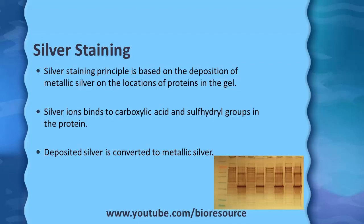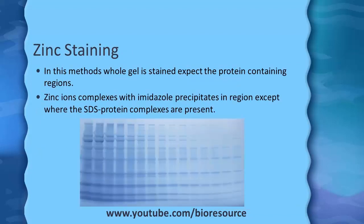For silver staining, two different protocols are available: one is the acidic protocol and one is the alkaline-based protocol. Ammonia and high sodium hydroxide are used in the alkaline-based protocol.